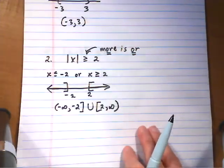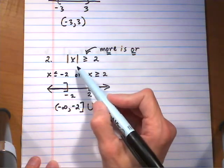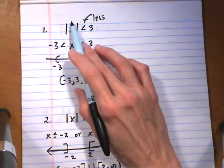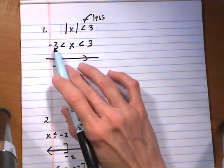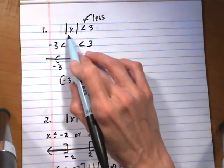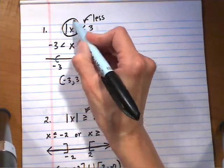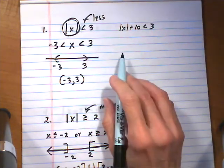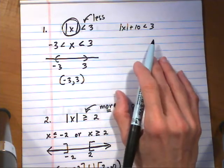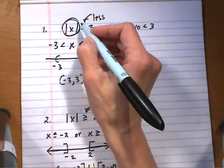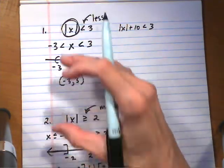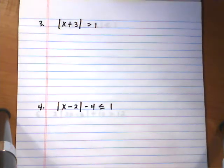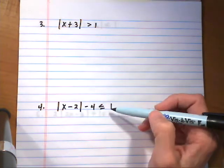Problems 3 through 6 have more going on. The key point is: you can only apply the recipe — saying x must be between negative c and c — if the absolute value is isolated, all by itself. If I had absolute value of x plus 10 is less than 3, I can't immediately say x plus 10 is between negative 3 and 3. You have to isolate the absolute value first before applying the recipes.